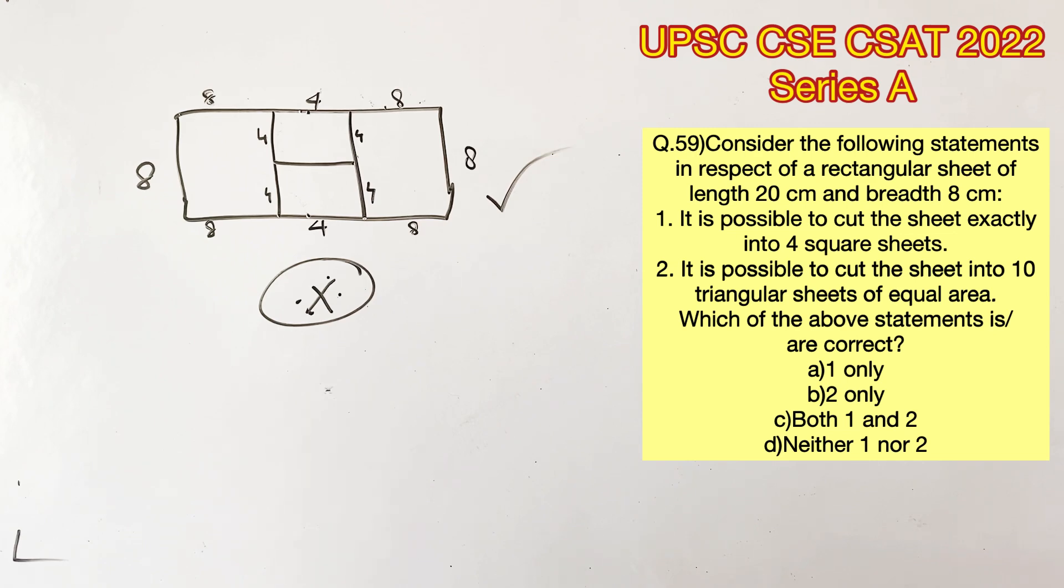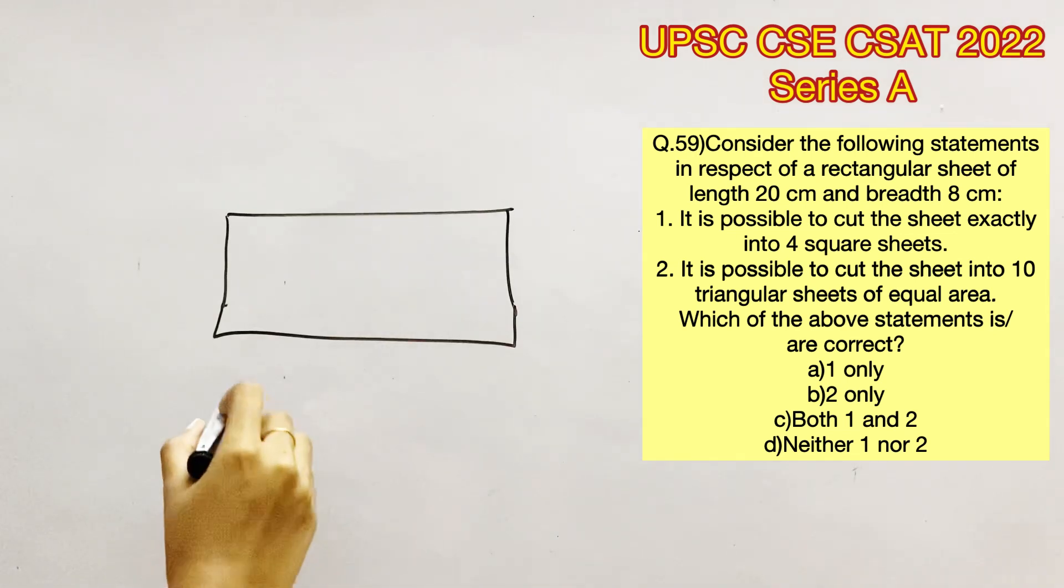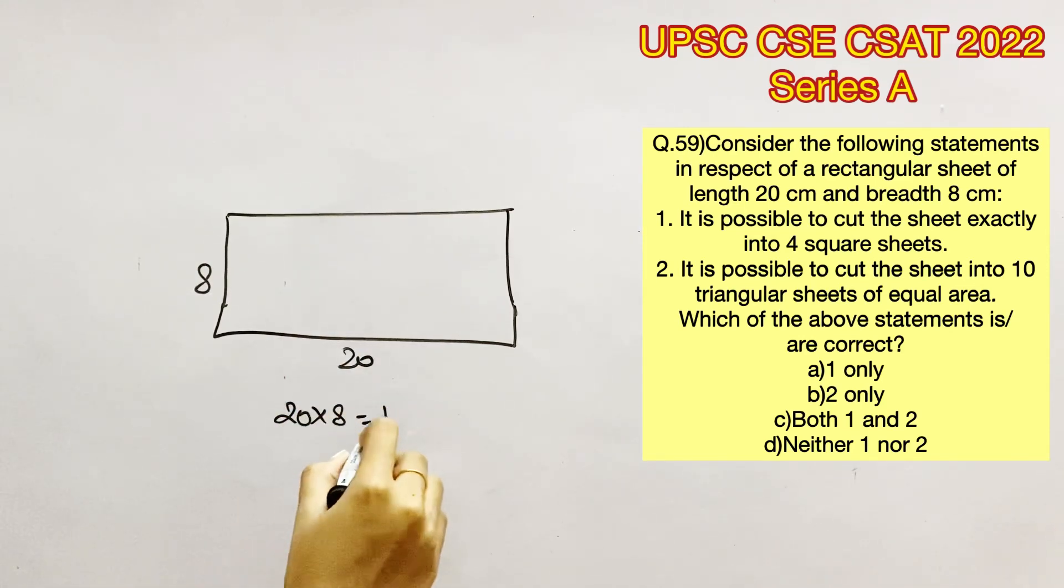Moving on to the second statement, it is possible to cut the sheet into 10 triangular sheets of equal area. So the area of the rectangle given will be 20 into 8 which is 160. So 160 divided by 10 will give us 16.